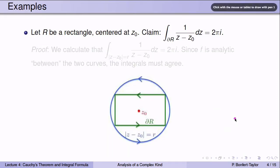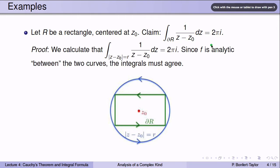Let's look at an example. Suppose R is a rectangle — the green rectangle drawn here — centered at a point z zero, which is where the two diagonals intersect. The claim is that the integral over the boundary of the rectangle, oriented in the positive sense, of one over z minus z zero dz is equal to two pi i. That is not easy to calculate directly, since you'd have to find parameterizations of all four sides. We can use Cauchy's theorem to make our lives much easier.